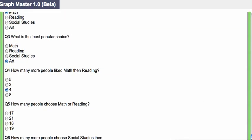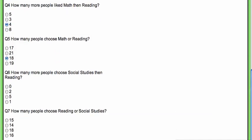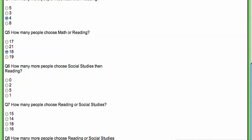How many people choose math or reading? Well, 11 plus 7 was 18. How many more people chose social studies than reading? Eight people chose social studies, and one person chose reading, so one more chose social studies.